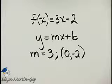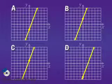Now let's look at our graph choices. Look at A, look at B, look at C, and look at D.